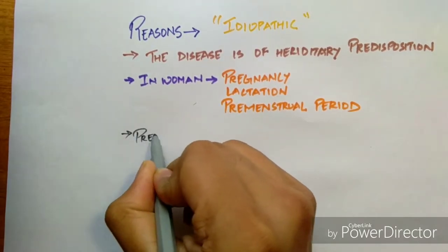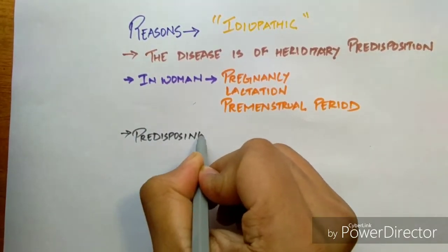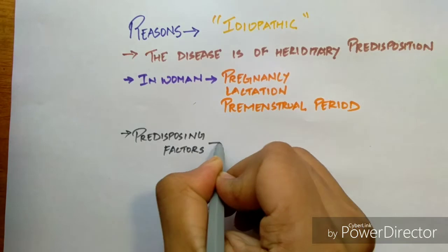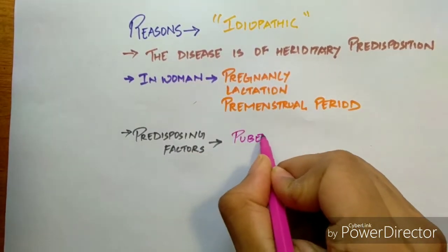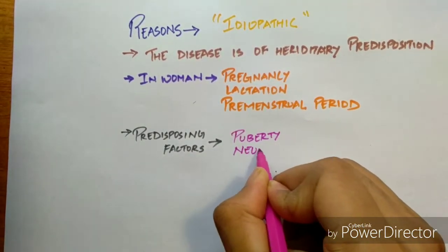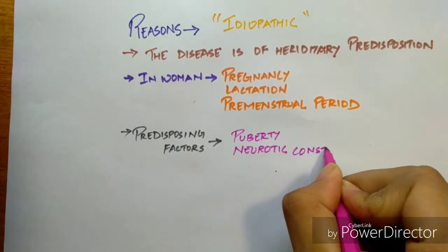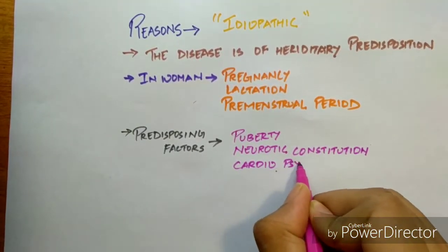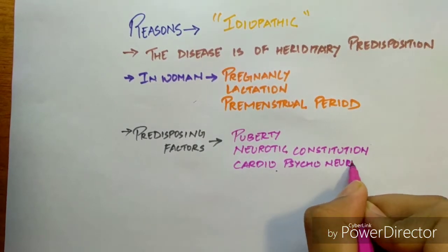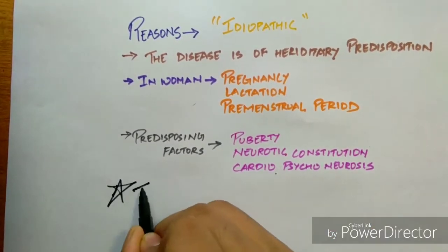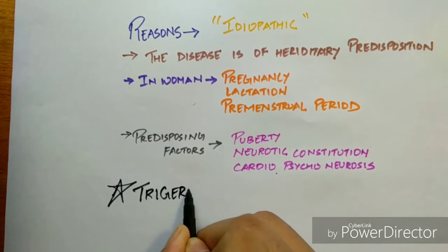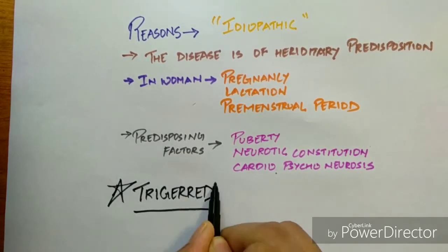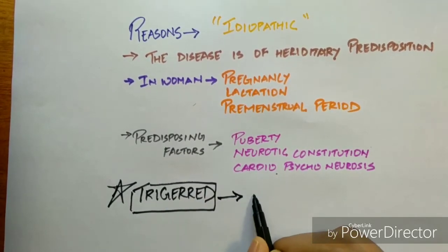The predisposing factors are puberty, neurotic constitution, and cardiopsychoneurosis. The main factor which triggers is trauma, which is the very main reason.